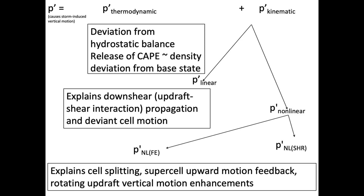When we talk about the different branches of the kinematic perturbation pressure, the linear component explains not only the downshear propagation of convection from the interaction of the updraft and the vertical shear, but also the deviant cell motion. The nonlinear part explains how we get potentially infinite — though limited by many physical reasons — intensification of a rotating updraft, both from shearing effects as well as fluid extension. This explains those upward motion feedback processes that can result in much stronger updraft than what CAPE, the thermodynamic component alone, can provide. However, the nonlinear component does not explain whether a right mover or a left mover or both would be dominant — that's from the linear component, which explains the downshear propagation as well as the deviant cell motion.